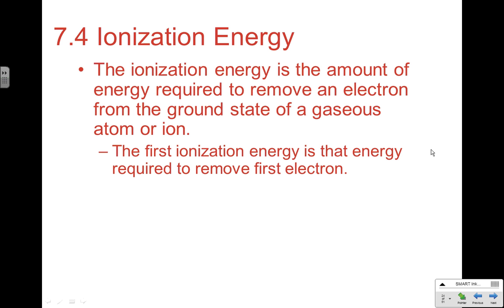We can pull one electron out of an atom and then we can pull a second and a third and so on. So we differentiate ionization energies by which ionization energy we mean. The first ionization energy is the energy required to remove the first electron from a neutral atom. So if we have sodium gas and we remove one electron, we're going to get Na+ and the removed electron as products. It would literally be the energy required to remove that electron — we have to put energy into that, as this is an endothermic situation.